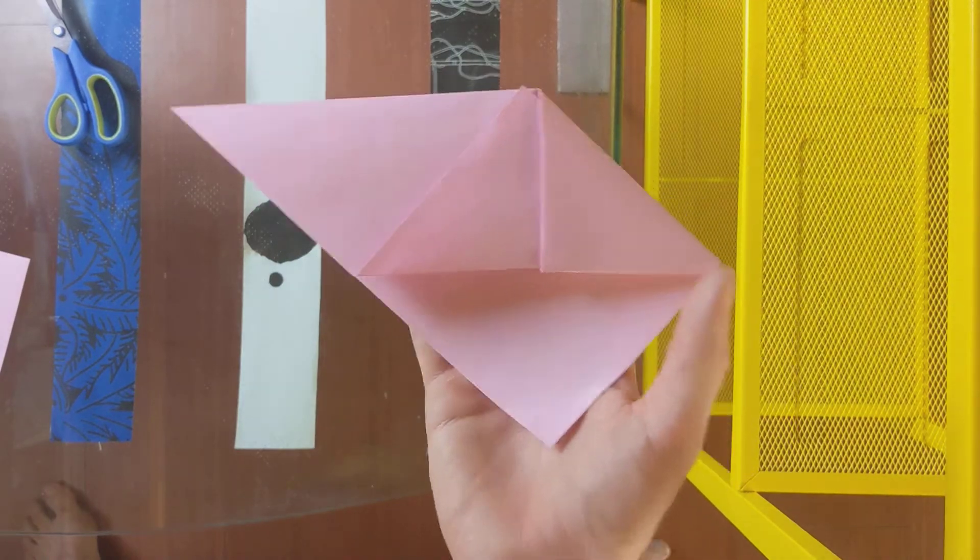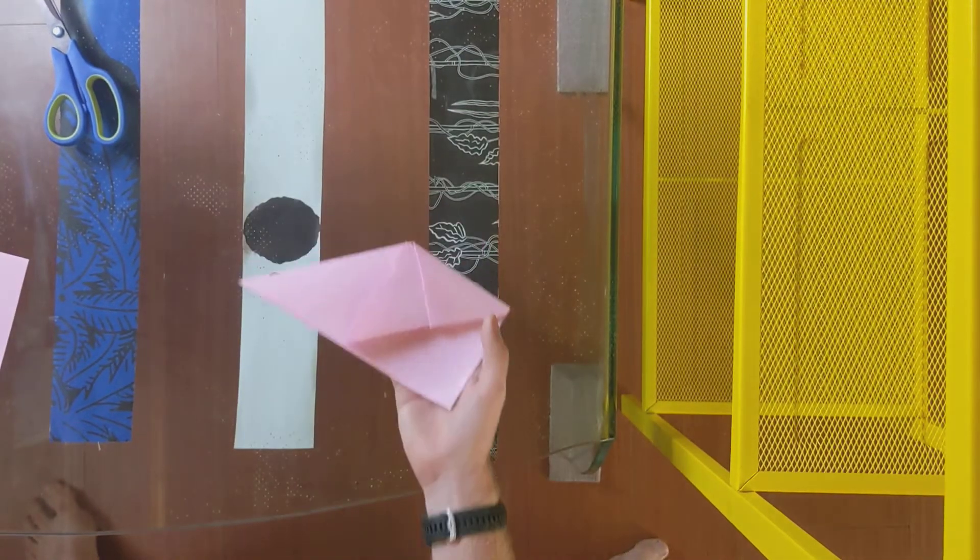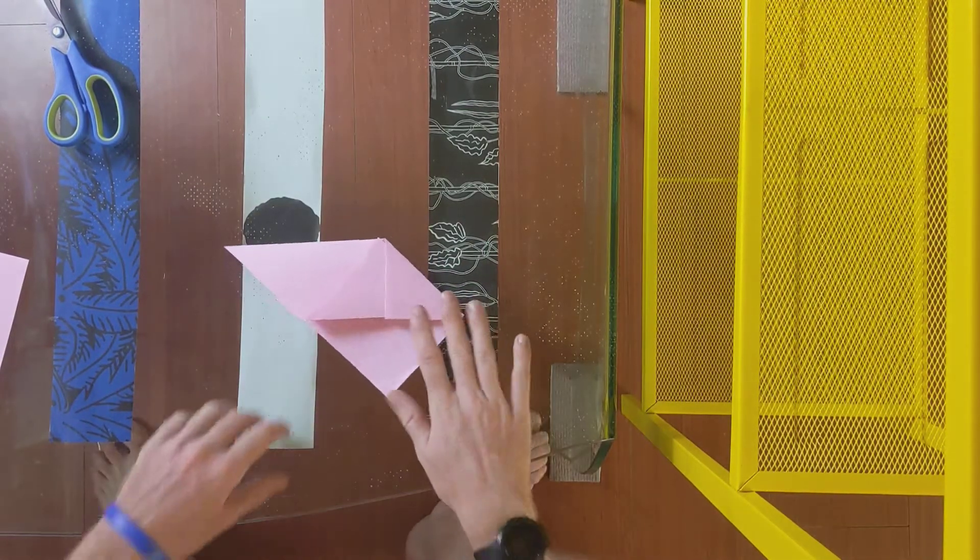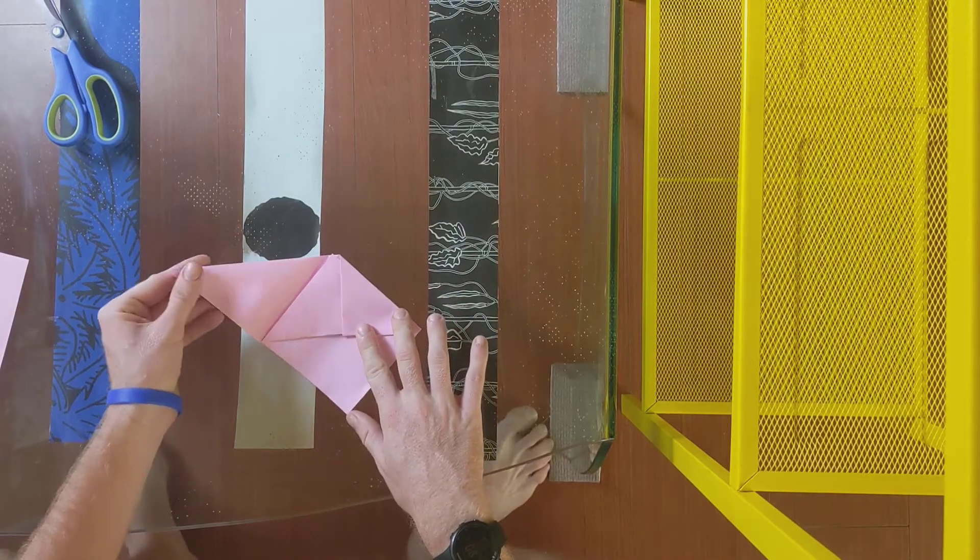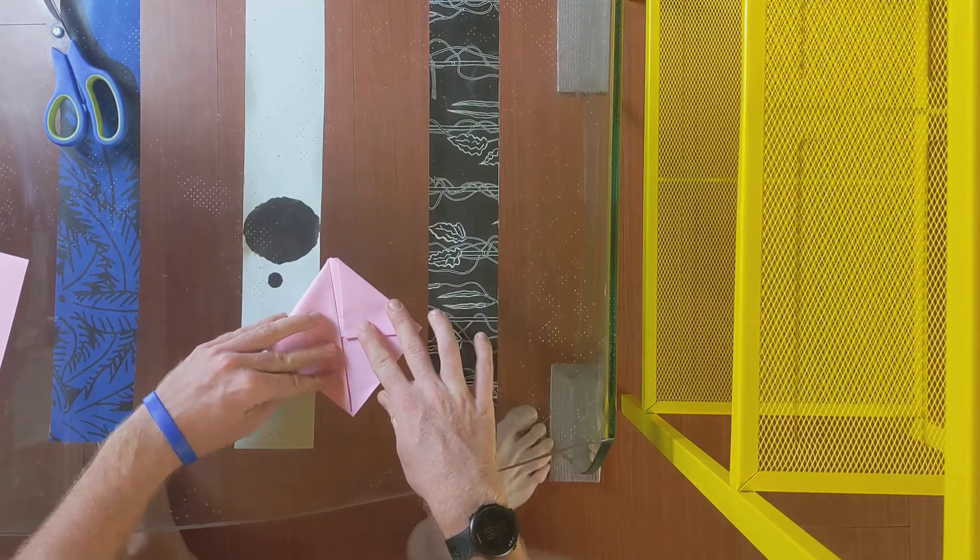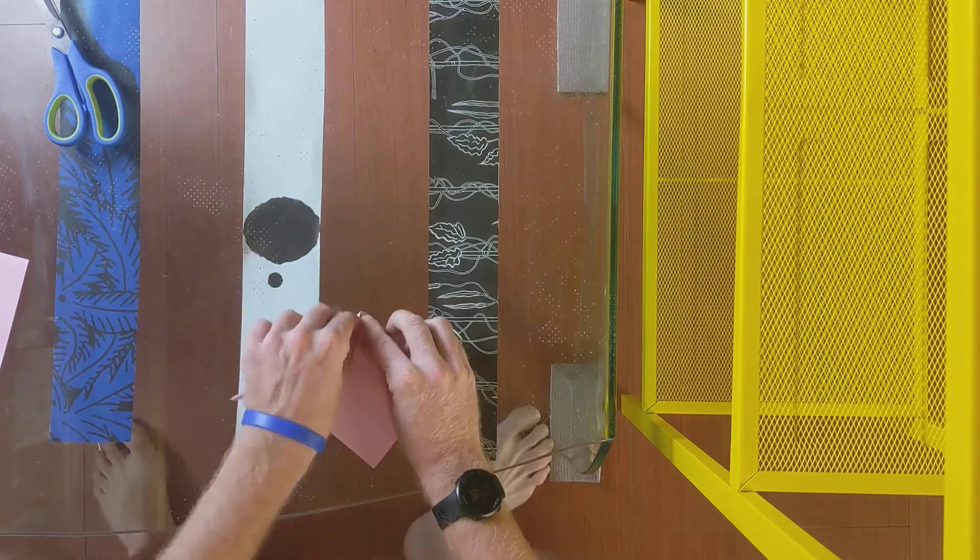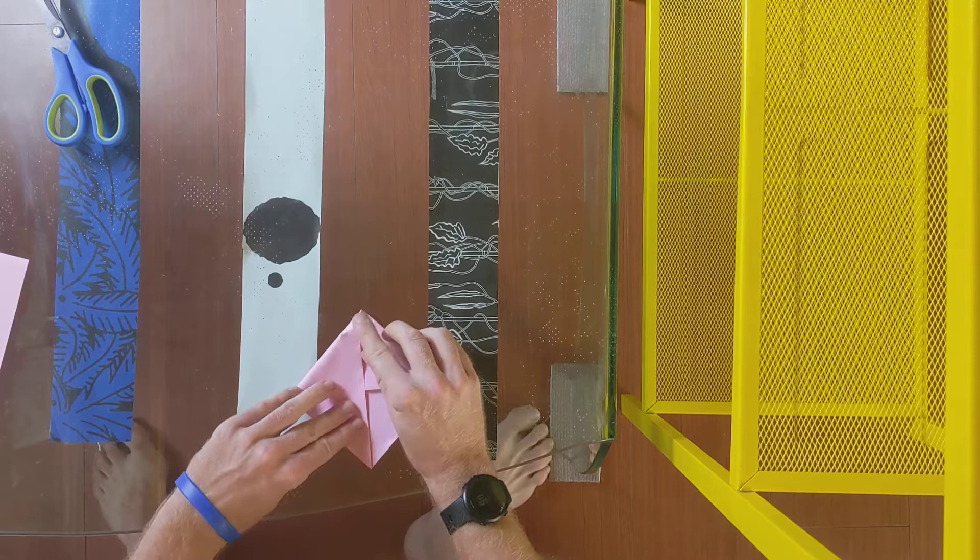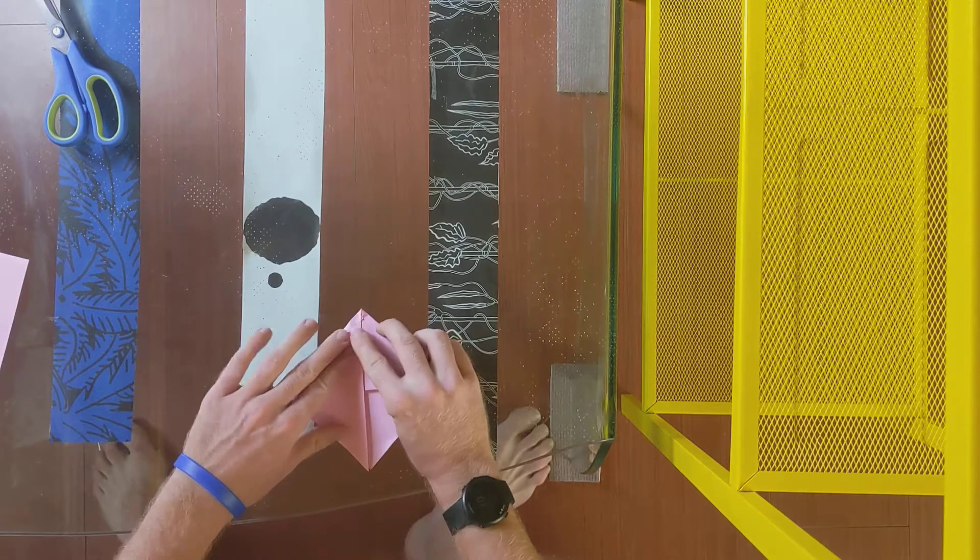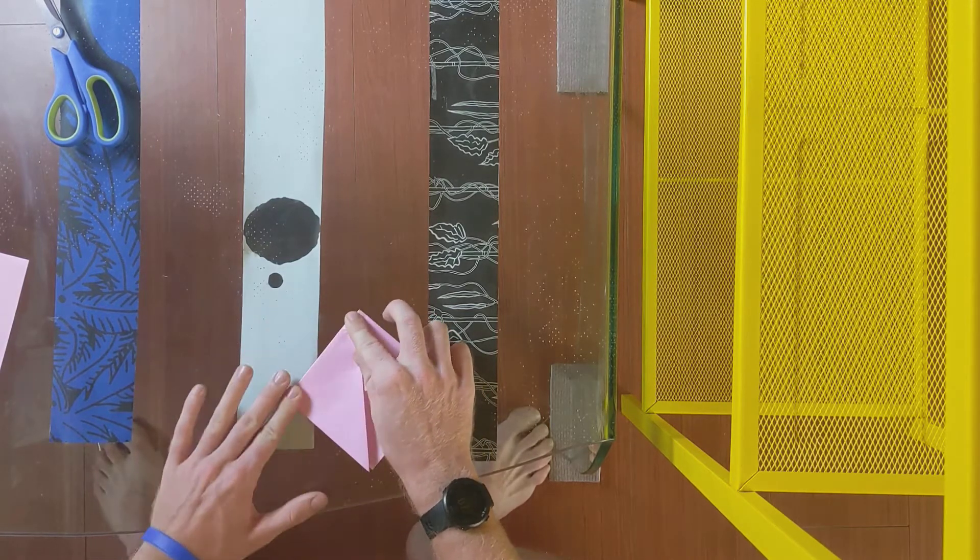If you are confused you can just rewind the video. But if you are ready to go we will do the same thing on the other side. So one more time take this corner and fold it down to the bottom. Mine got a little bit messed up so it's okay if it doesn't go exactly to the bottom. Try to get it as close as you can.